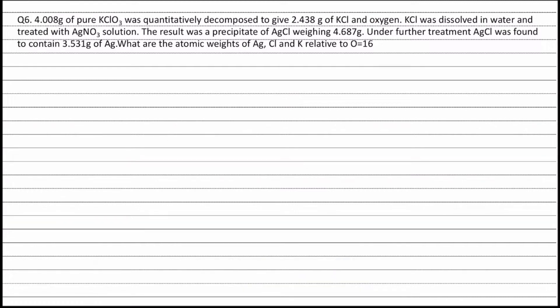Question 6. 4.008g of pure KClO3 was quantitatively decomposed to give 2.438g of KCl and Oxygen. KCl was dissolved in water and treated with AgNO3 solution. The result was a precipitate of AgCl weighing 4.687g. AgCl was found to contain 3.531g of silver. What are the atomic weights of silver, chlorine, and potassium relative to oxygen equal to 16?